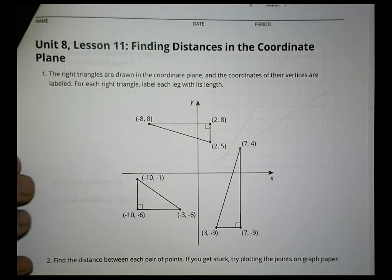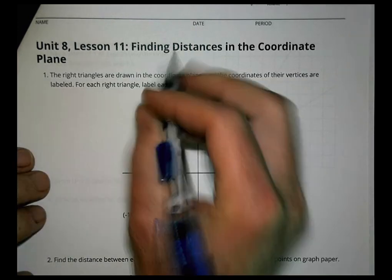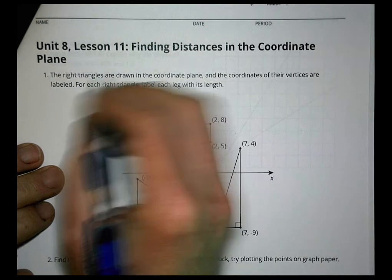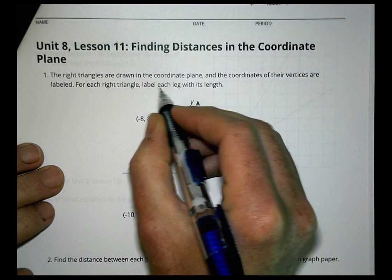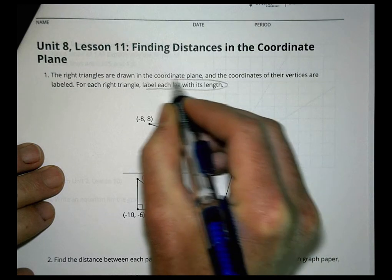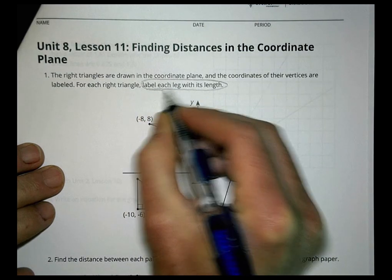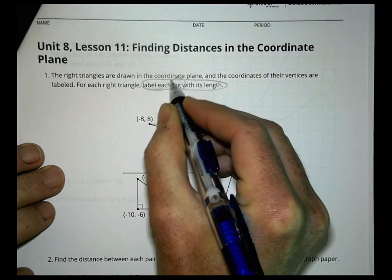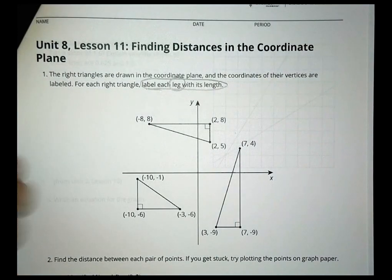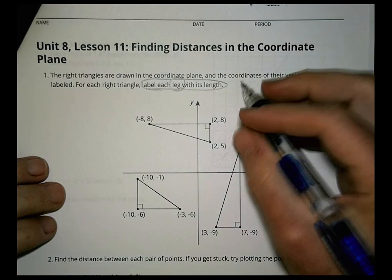Homework time — Math 8, Unit 8, Lesson 11, Finding Distances in the Coordinate Plane. Right triangles are drawn in the coordinate plane and the coordinates of the vertices are labeled. For each right triangle, label each leg with its length. I just want you to find the leg lengths — not the hypotenuse.